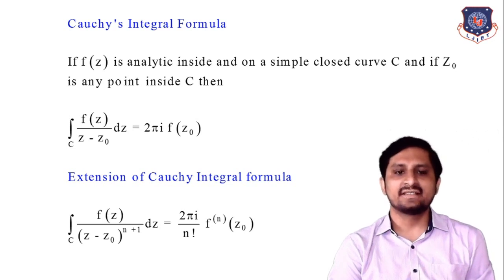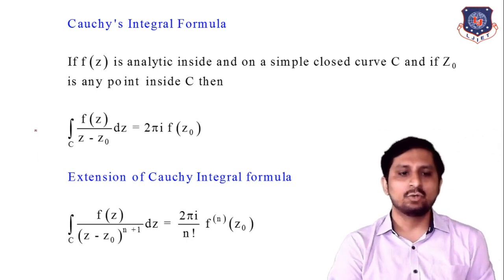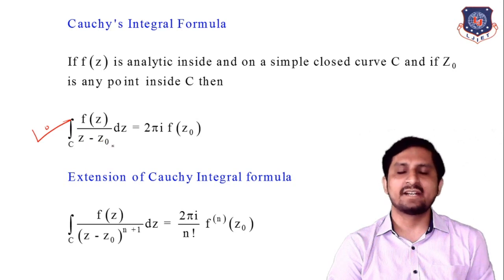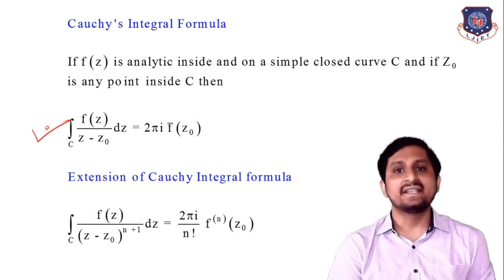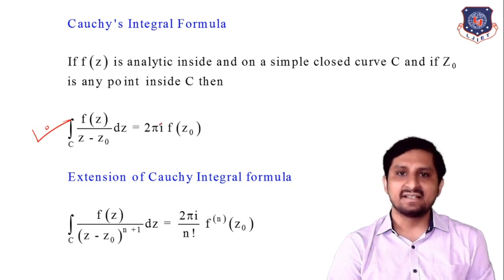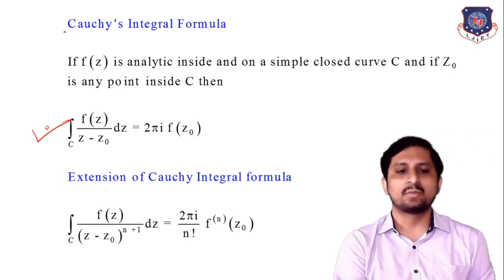You already know that we already discussed about Cauchy's Integral Formula, but only for the basic Cauchy formula: the integration of f(z) upon (z minus z₀) dz equals 2πi·f(z₀), where f(z) is analytic inside and on a simple closed curve C, and z₀ is any point inside C. In that case we use Cauchy's Integral Formula.